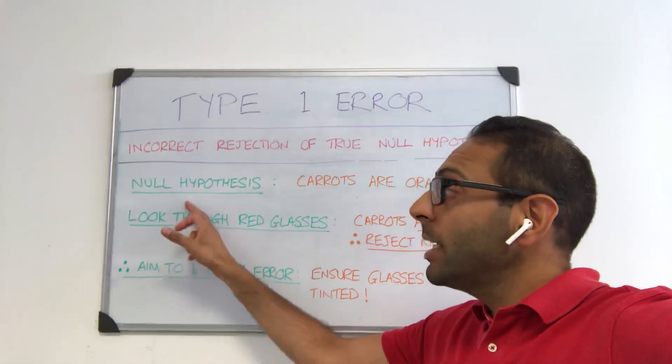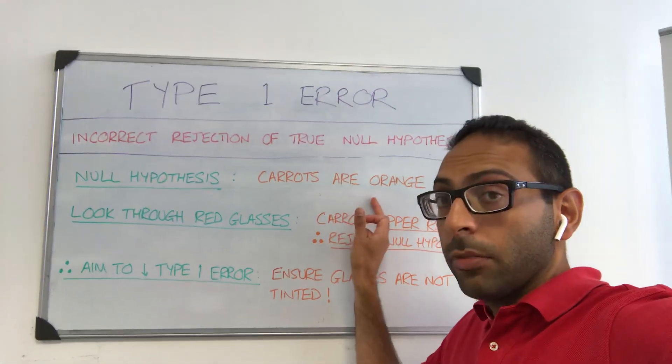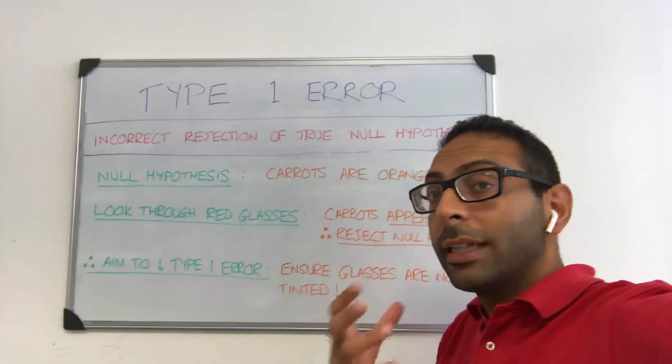So for example, say you look at a null hypothesis that says carrots are orange. We get that, that's pretty accepted, we know that carrots are orange.